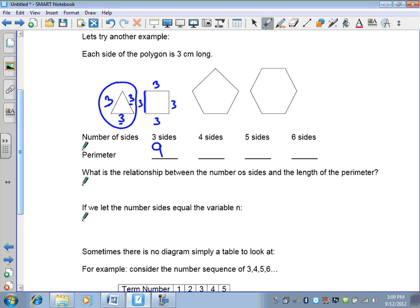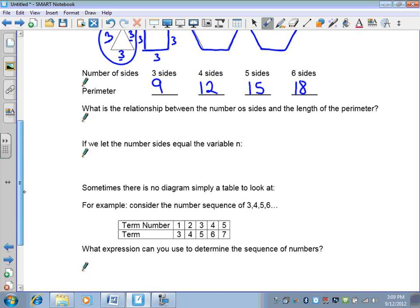So if you have four sides, it's three, six, nine, twelve. If you have five sides, it's three, six, nine, twelve, fifteen. And if you have six, it's three, six, nine, twelve, fifteen, eighteen. So what is the relationship between the number of sides and the length of the perimeter? Well, we've got to get from three to nine, four to twelve, five to fifteen, and six to eighteen. In this case, we're multiplying the number of sides by three. So we let the number of sides be represented by the variable n. This becomes three times n. Remember that when you have brackets or parentheses side by side, that means multiplication.